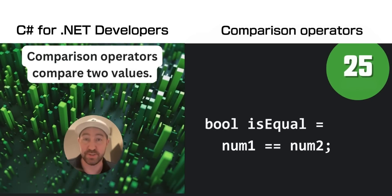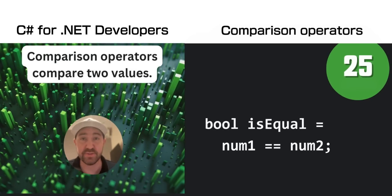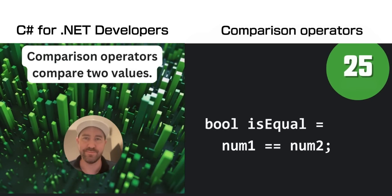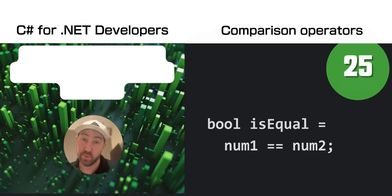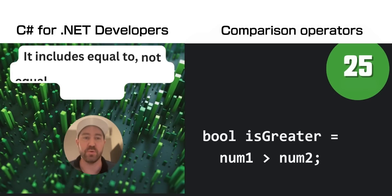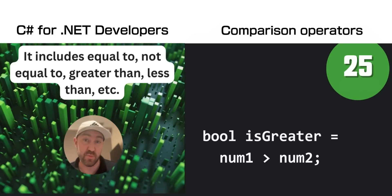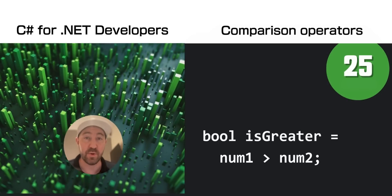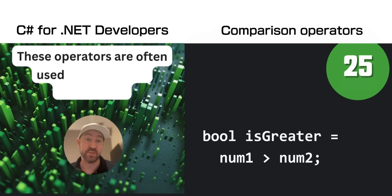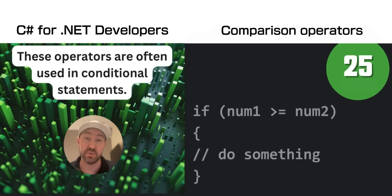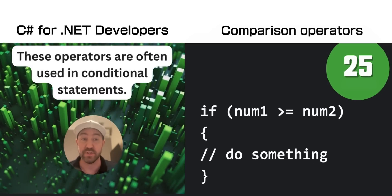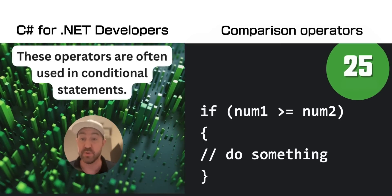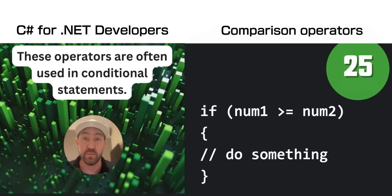A comparison operator compares two values — the left and the right. You have equal to, not equal to, greater than, less than, and a load more. You can combine them in if statements to make a conditional statement. For example, if number one is greater than or equal to number two, we do something. Very, very useful.